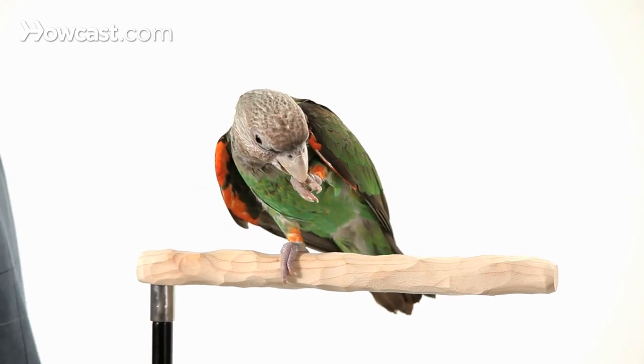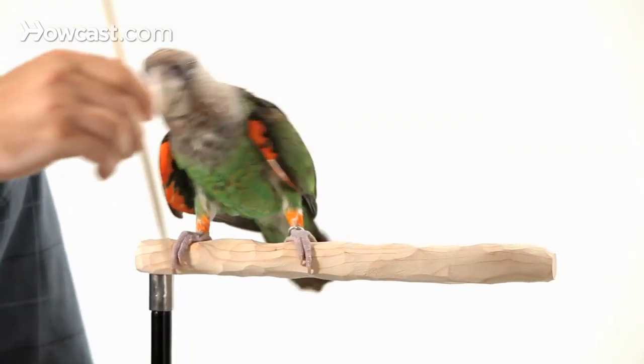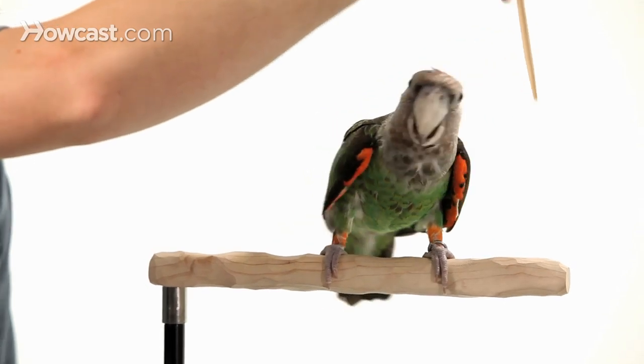So you're going to want to make sure that his targeting skills are up to speed, because the rest of the trick is all about following that target stick around a circle. Truman, target. Good.